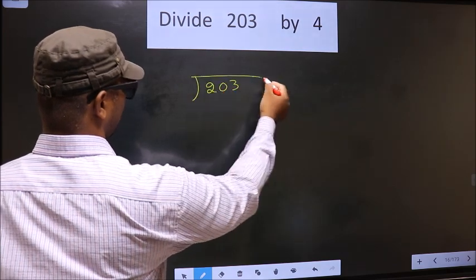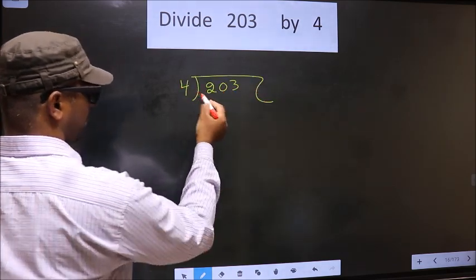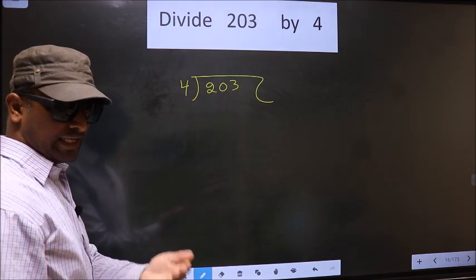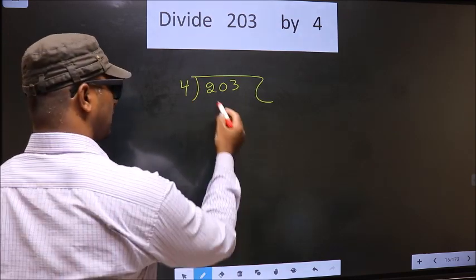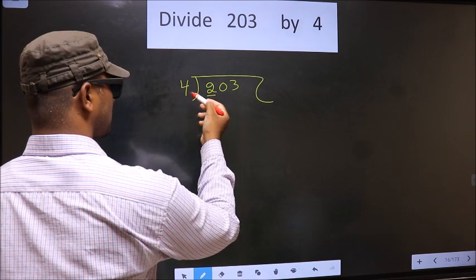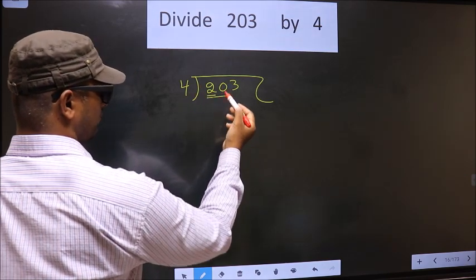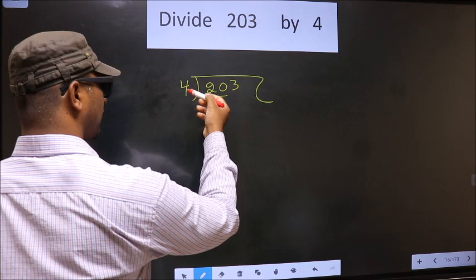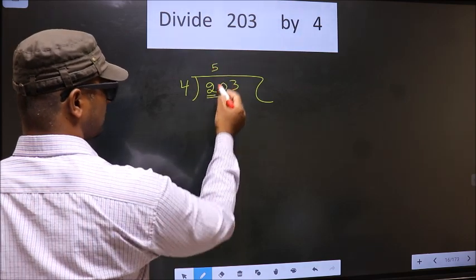That is 4 divided into 203. Next. Now, here we have 2. 2 is smaller than 4. So, we take two numbers. That is 20. When do we get 20 in 4 table? 4 times 5 is 20.